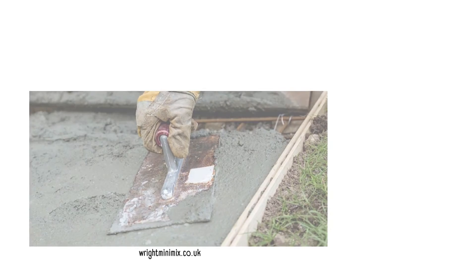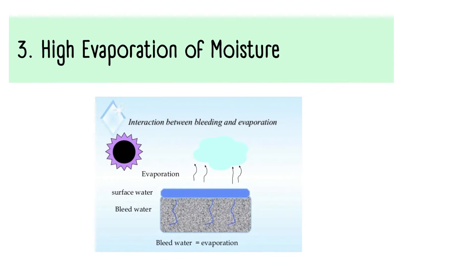Cause number three: high evaporation of moisture, caused by high temperature conditions at the construction site. Excessive evaporation of bleeding water gives the appearance of premature finishing, prompting the next finishing operation to begin. In reality, the bleeding water and air bubbles are still underlying within the concrete layer due to the high temperature conditions.